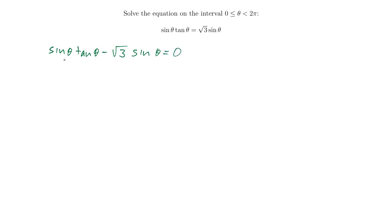And now, I have two terms here on the left-hand side, and they each have a sine theta in them. So I can factor out a common term. There's a common factor of sine. So I get sine of theta times the quantity tangent of theta minus the square root of 3. And that's equal to 0.